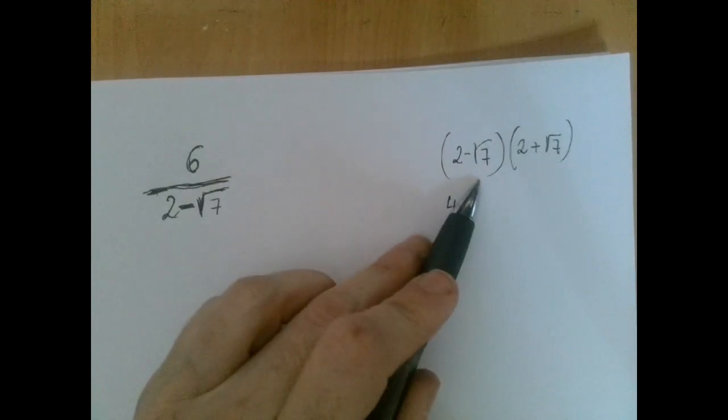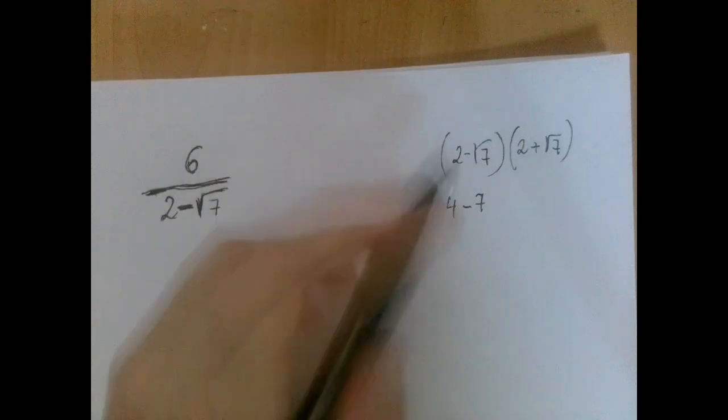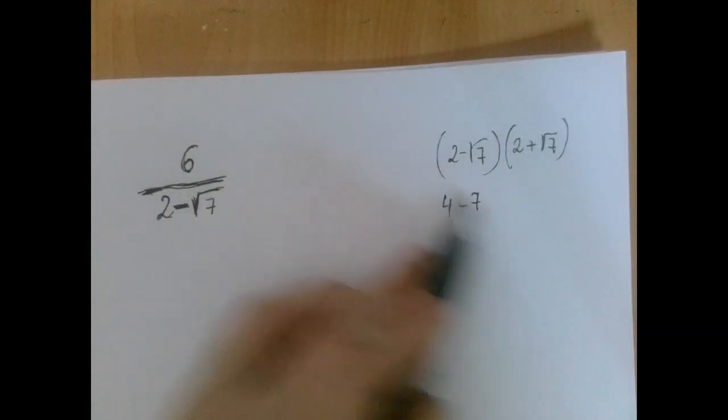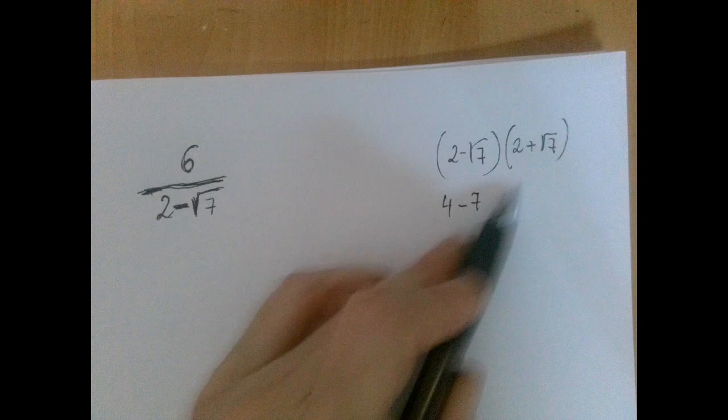Root 7 squares to 7, and O and I cancels out each other because we have a plus 2 root 7 and a minus 2 root 7.